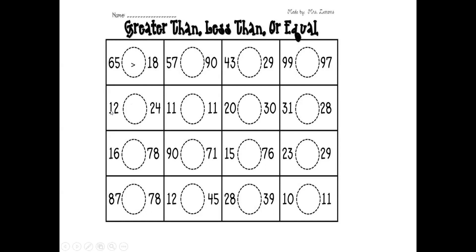Here you see: this is 12, starting with 1. You are starting with 2. Which is bigger? 24 is big. So, 12 less than 24. Open mouth to the big number. Number 3: 16 and 78. 16 is smaller because starting with 1, but this is starting with 7. So, open mouth to 78. We will read: 16 less than 78.